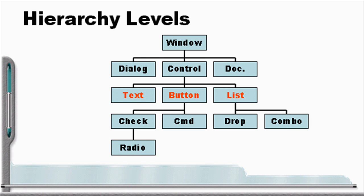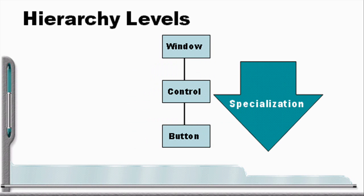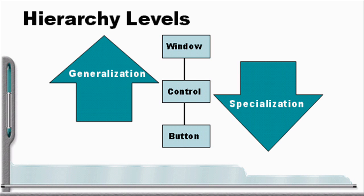Text boxes, buttons, and list boxes are types of controls. Similarly, command buttons and check boxes are types of buttons. So we're seeing specialization as we move down the hierarchy from window to control to button, and generalization as we move up.